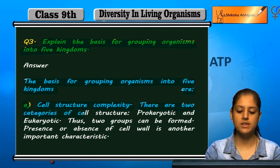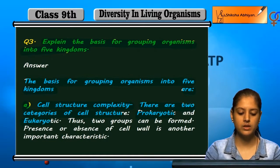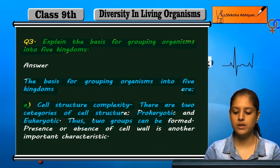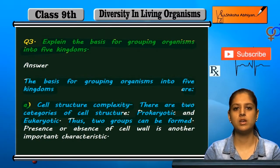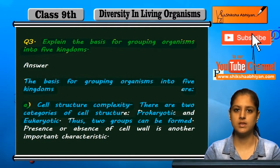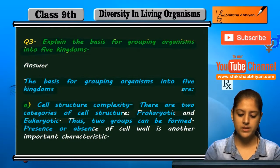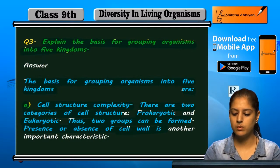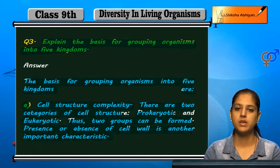There are two categories: one is prokaryotic and one is eukaryotic. The presence and absence of a cell wall is another important characteristic — whether the cell wall is present or absent.